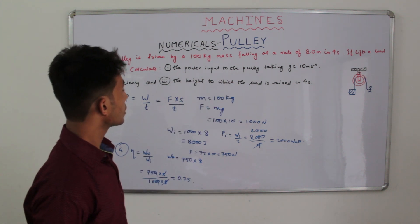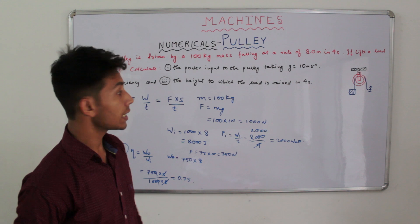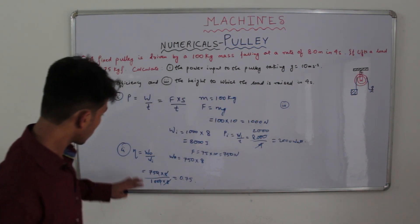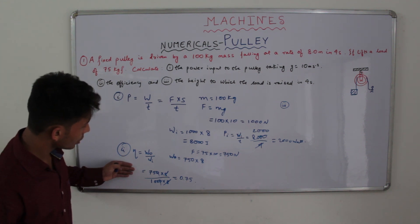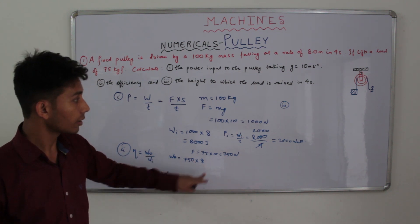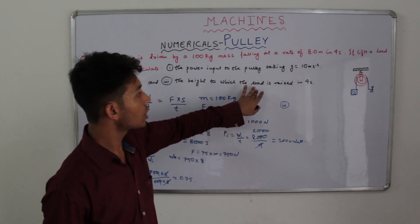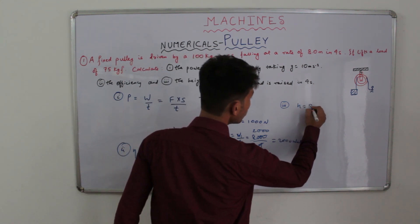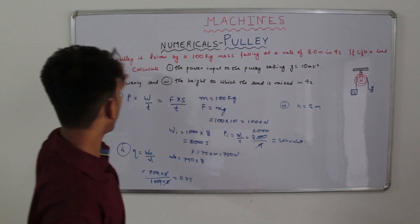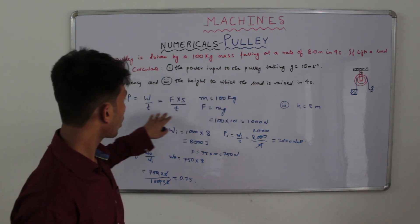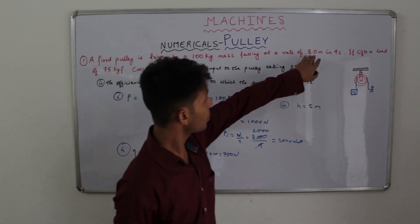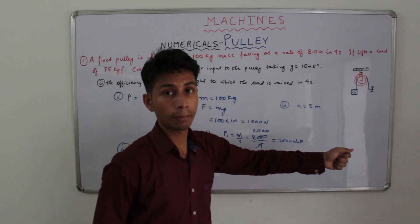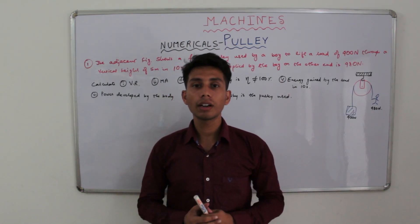The third part is the height to which the load is raised in 4 seconds. In calculating efficiency we took the displacement to be 8 meters, so that is the height to which the load will be raised in 4 seconds. Height equals 8 meters, since the body which supplies the work input is displaced by 8 meters, so our load will also be displaced by 8 meters in the same time.